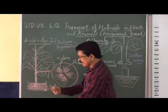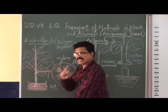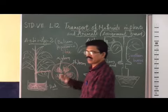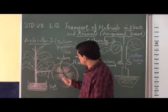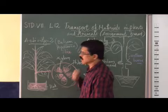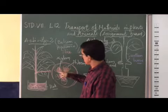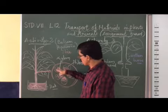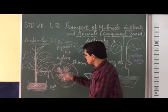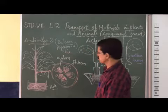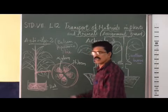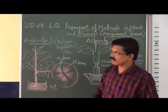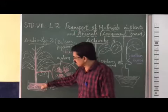Now, take this plant and cut a cross-section — take a thin slice and place it on a glass slide and observe through the microscope. You can see the xylem and phloem, which together form a vascular bundle. This vascular bundle becomes red in color.